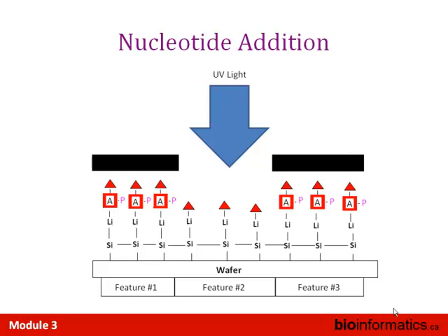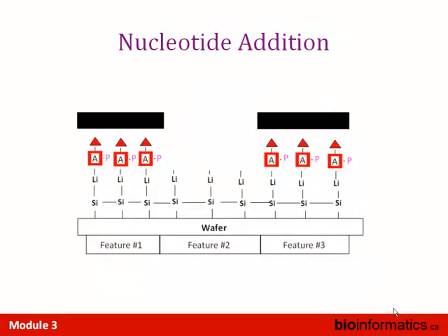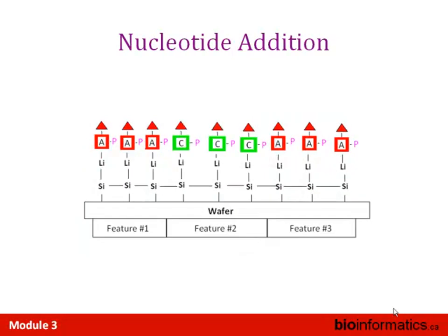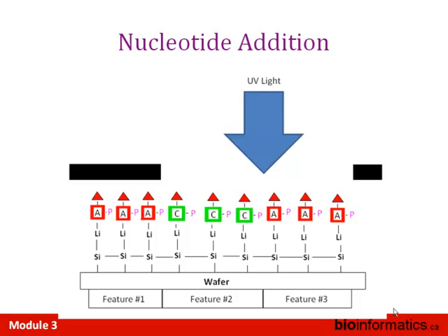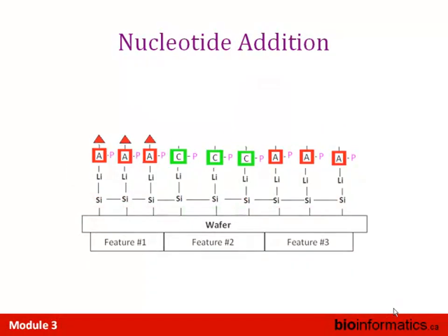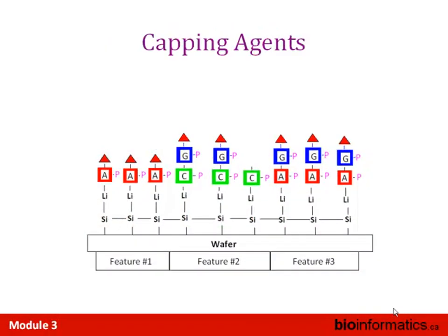You change your mask and shine UV light onto feature number two, reactivating the linker, then wash over a different nucleotide, building up the first base on feature two sequentially. This is done repeatedly base by base. What happens if the chemical reaction is incomplete? That definitely happens because you've got 10 million sequences on an individual spot.